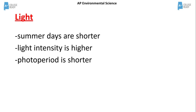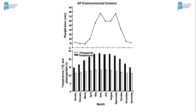The summer days are shorter and light intensity is higher because this biome is closer to the equator than the tundra, so the sun rays are more intense. In the top graph we see precipitation in the taiga. In the bottom graph we see a comparison of temperature and photoperiod, which is basically length of day. Notice that day length stays relatively constant throughout the year with slightly longer days in the summer.